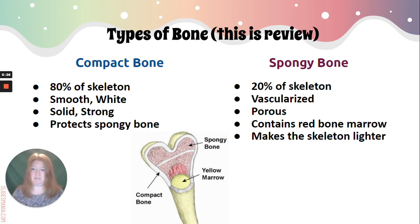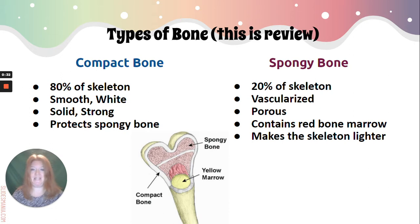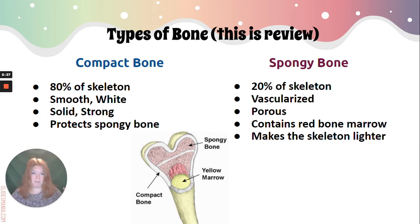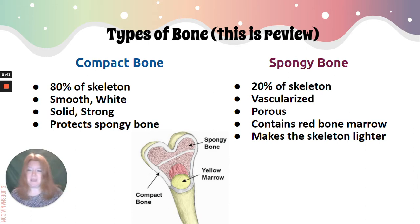Spongy bone is only about 20% of our skeleton, but it is vascularized, which means it has a good blood flow. It's porous, which means there are open spaces, and it contains our red bone marrow. It also helps to make our skeleton lighter. So the two work together — both are important.